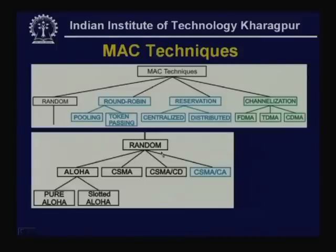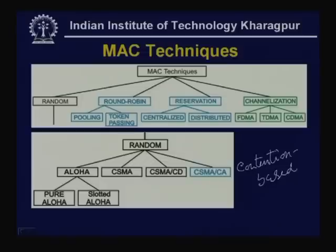Here is the overview of the total picture. In the last class we discussed random access protocols like ALOHA, CSMA, CSMA/CD, pure ALOHA, and slotted ALOHA. These are all contention-based where collision is allowed to take place, particularly when traffic increases. In this lecture we shall consider CSMA/CA, then round-robin and reservation-based protocols.